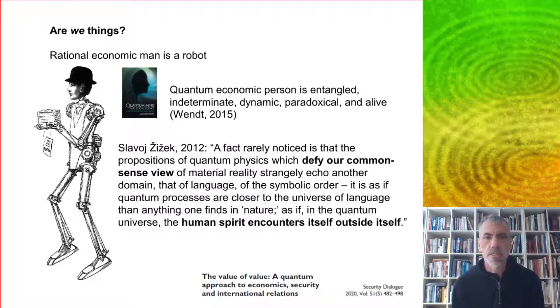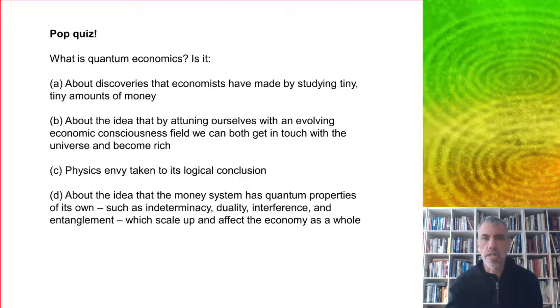In economics, there's this idea of rational economic man is kind of like a robot. The picture which is emerging from quantum social science is a quantum economic person who is entangled, indeterminate, dynamic, paradoxical, and alive. As the philosopher Slavoj Zizek said, a fact we rarely notice is that quantum physics appears to defy our common sense view of material reality, but it seems to apply somewhat better to the sort of human reality, where the human spirit encounters itself outside itself.